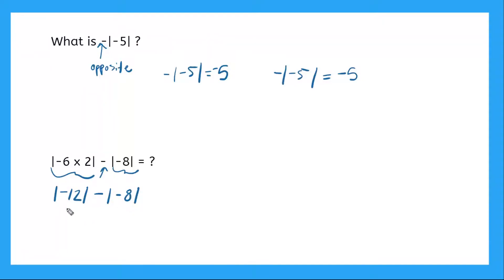So I know that 6 times 2 is 12 minus the absolute value of negative 8. So now I have two absolute value problems. What's the absolute value of negative 12? Negative 12 is a distance of 12 from zero. So that's equal to 12 minus the absolute value of negative 8. How far from zero is negative 8? Positive 8, that's right. Perfect. So now I just have 12 minus 8. Do you know what that is? Yeah, it's 4. And that's my answer there. Good job.